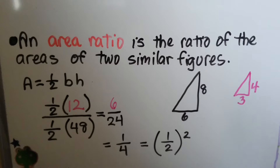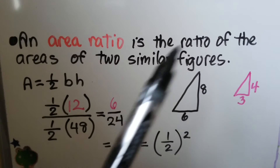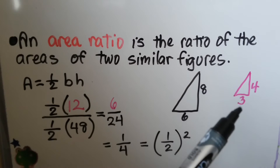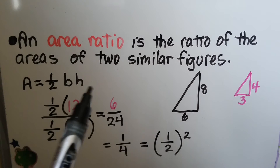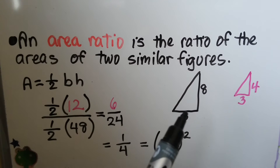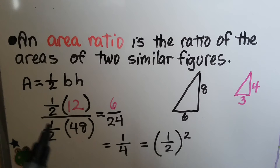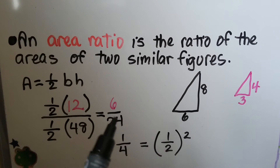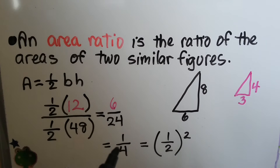An area ratio is the ratio of the areas of two similar figures. Using our similar triangles and the formula for area of a triangle — one half base times height — we get 3 times 4 equals 12, and 6 times 8 equals 48. Multiplying each by one half gives 6 over 24, which reduces to one fourth. That can also be written as one half squared.